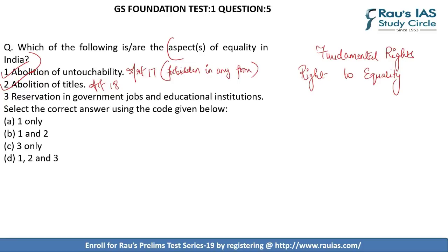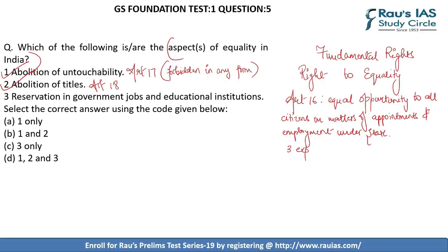Article 16 provides equal opportunity to all citizens in matters of appointments and employment under any state. However, there are exceptions — one of them allows the state to provide reservation or appointments in favour of any backward class because it is not adequately represented in state services. So there is reservation for backward classes, and hence statement 3 is also correct. The correct option is D.